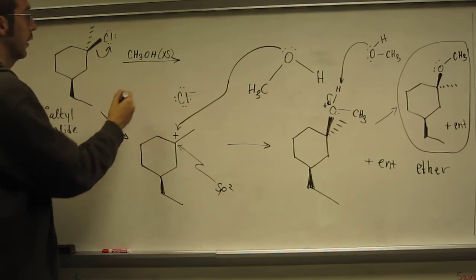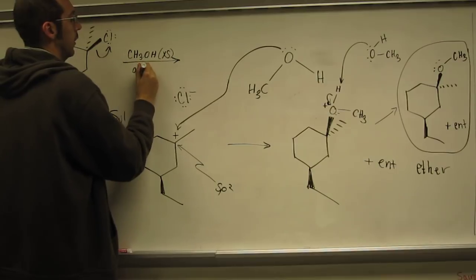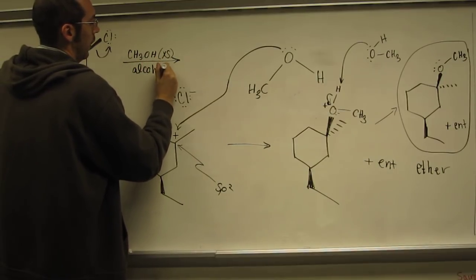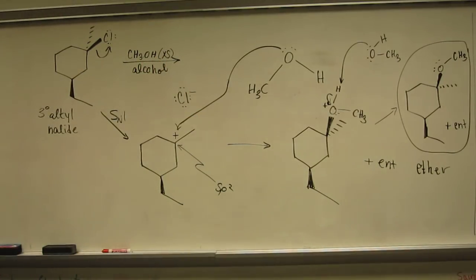Take a tertiary alkyl halide, react it with an alcohol, and make an ether. But it's a racemic mixture of these two ethers, because of the SN1 nature of the reaction.